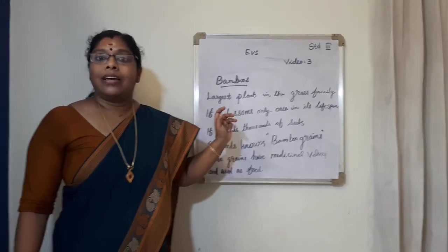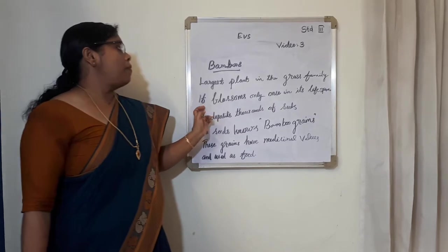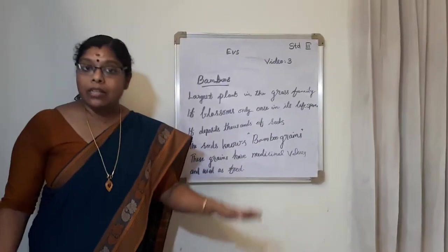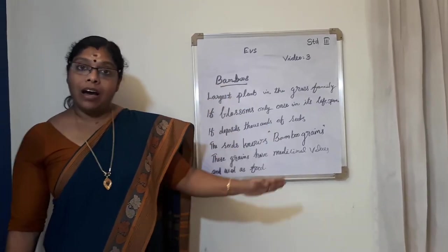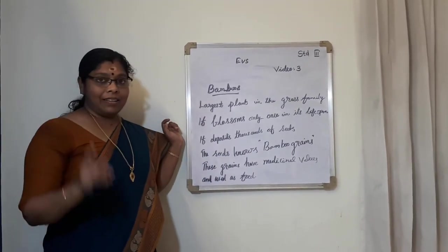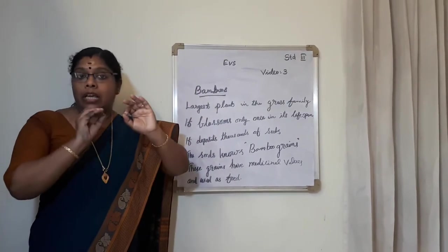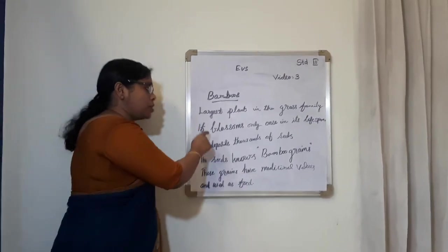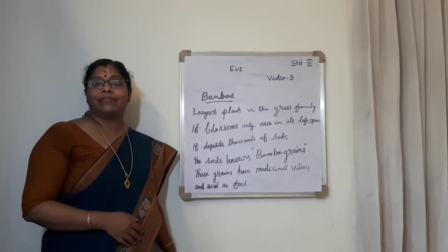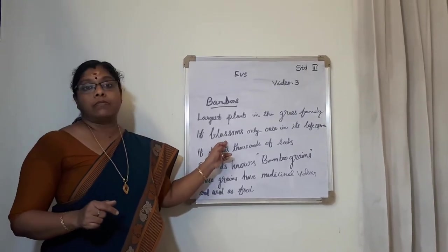Bamboos are not a tree. The largest plant in the grass family is bamboo. It blossoms only once in its life span. In its whole life, only one time it blossoms. And after that, the bamboo plant dies.